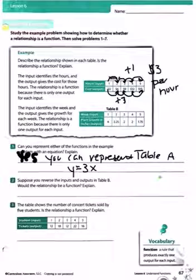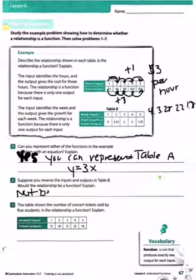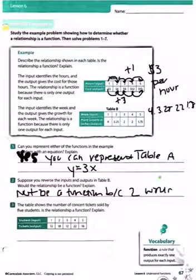Number two, suppose you reverse the inputs and outputs in table B. Would the relationship be a function? Explain. So if I switched them around, that means it'd be 4 and then 3.25 and then 2 and then 2 and 1.75. It would not be a function because 2 would be used twice.